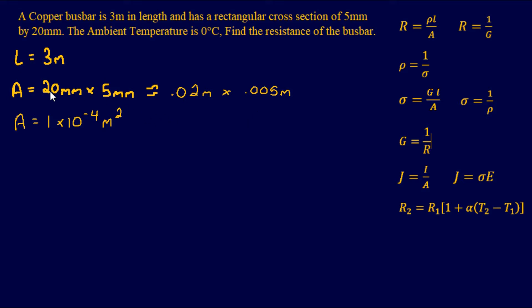It would have been possible to multiply 20 millimeters by 5 millimeters first and then convert, but it's just easier to move the decimal points early. So we have the area, we have the length, and we have the temperature at 0 degrees Celsius. Now we need to find resistivity — we'll look at our FE manual.